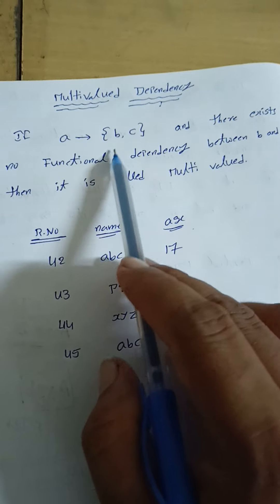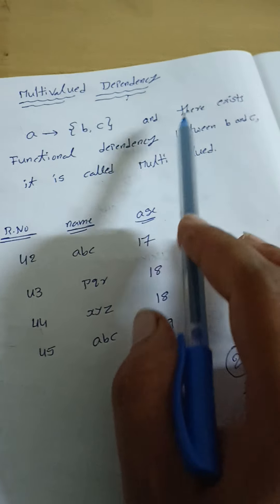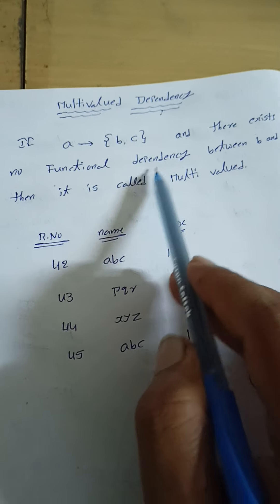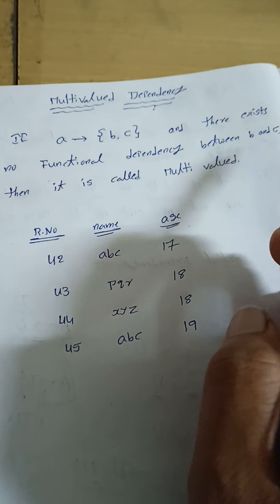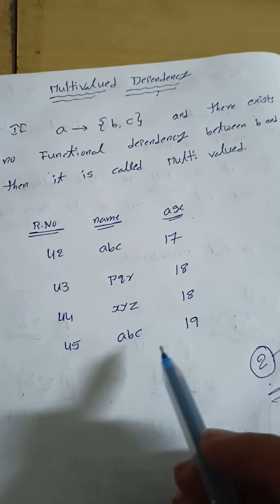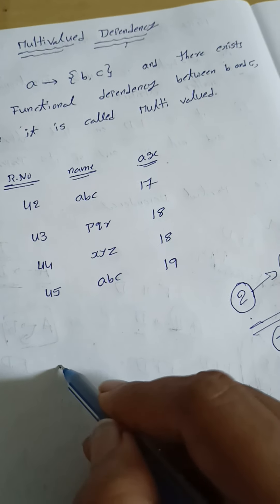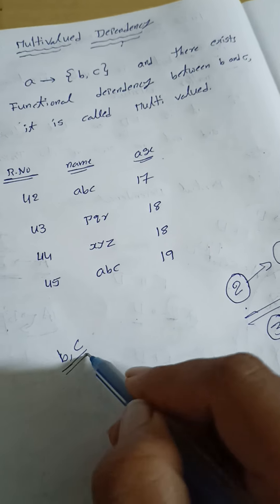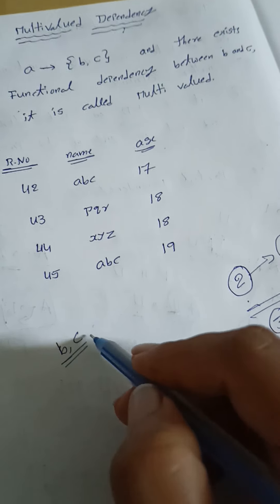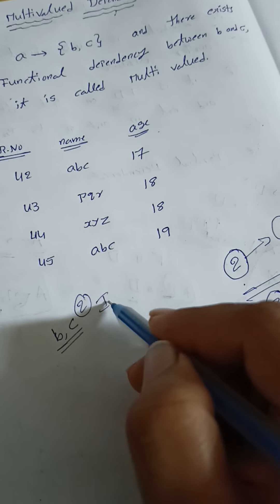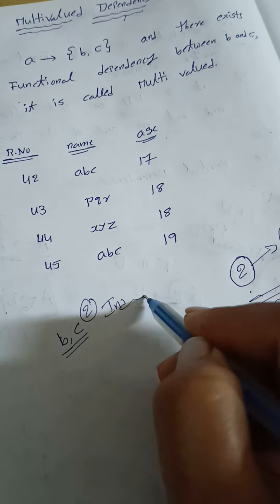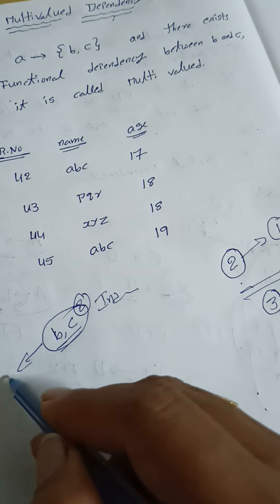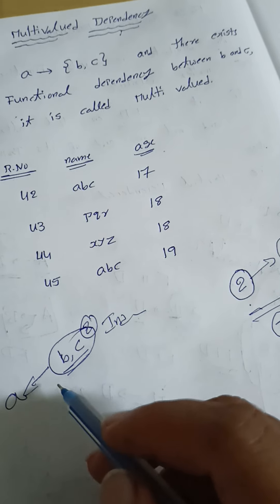If A implies B, C — that is, A determines both B and C — and there exists no functional dependency between B and C, then B and C are independent variables, but both are dependent on another variable A.